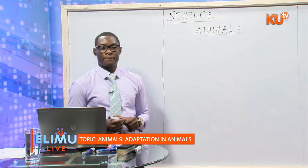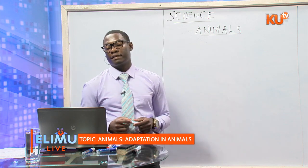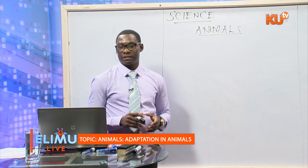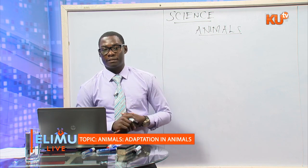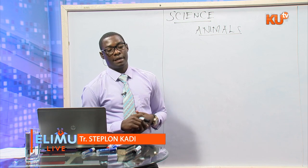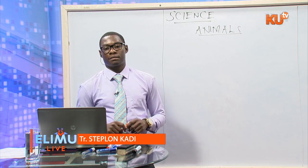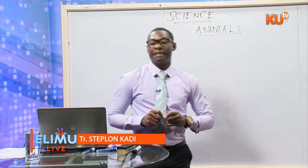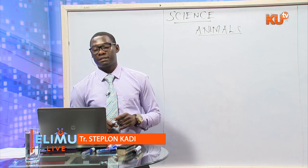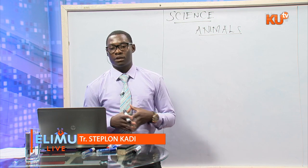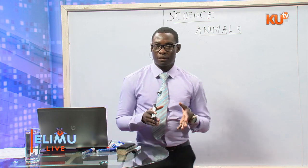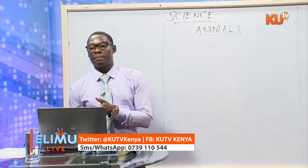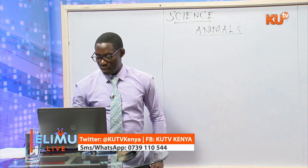Cattle or a cow will give us meat, milk, and skin. I want to emphasize sheep and goat because most examiners set questions there. A goat gives us meat, mohair, and milk. A sheep gives us meat and wool, but not milk. So get the difference: a goat gives us milk but a sheep does not give us milk.